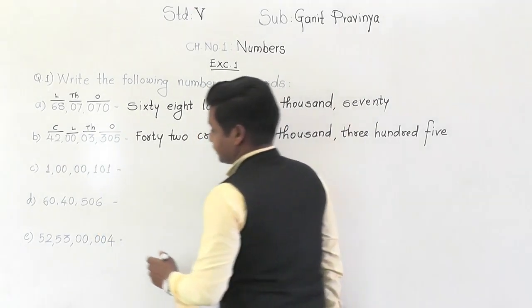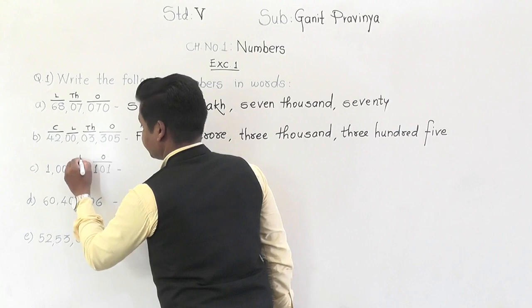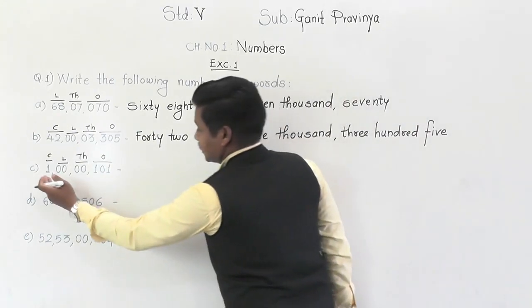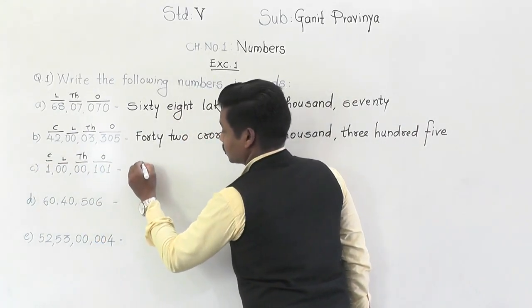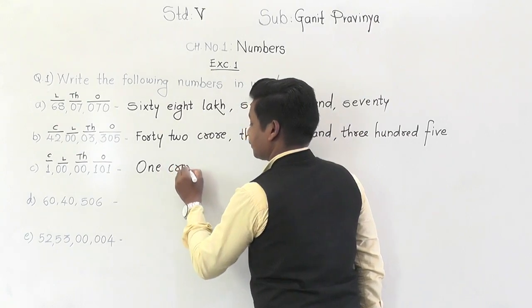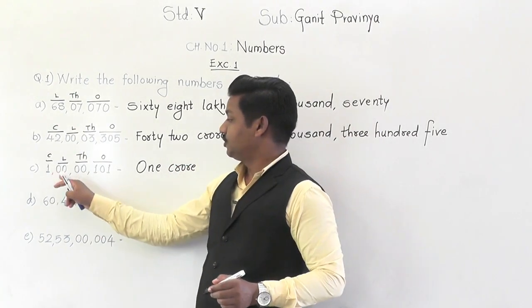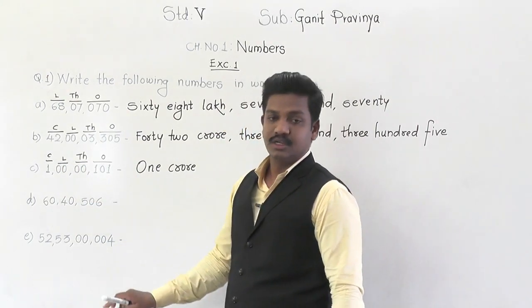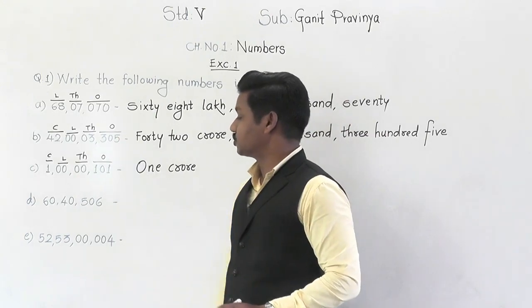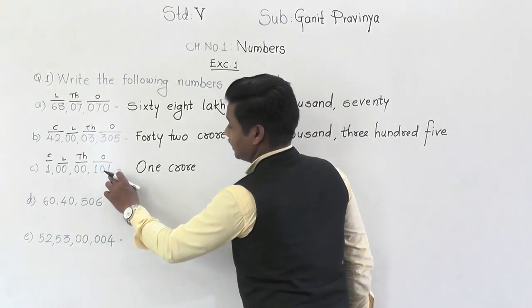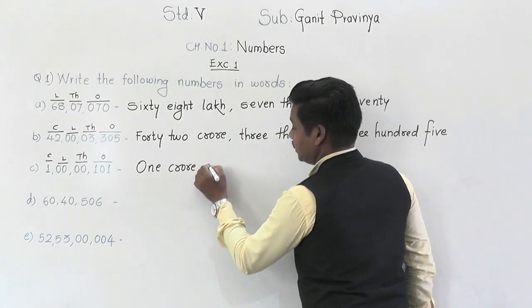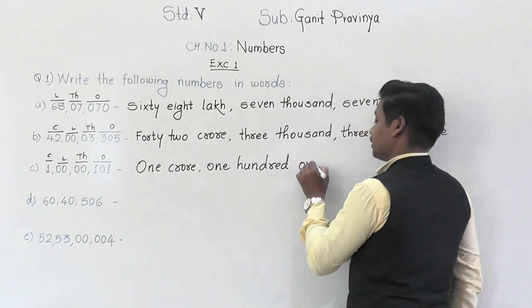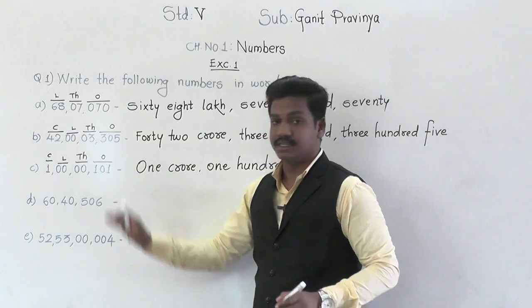For the next number: ones group, thousands group, lakh group, and crore group. In the crore group there is 1 — so one crore. In the lakh group and thousands group there are zeros — not needed to write those; directly come to the ones group, which has 101. So the number name is one crore 101.